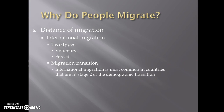International migration has two major types: voluntary, which is by choice, and forced, which we discussed earlier. We also talk about a migration transition — linking back to the demographic transition model. International migration is most common in countries in stage two of the demographic transition, which makes sense because that's the stage where population is skyrocketing and job opportunities haven't kept pace. There's a ton of people and not enough work, so people are moving out of poor countries into richer countries where there are more opportunities.